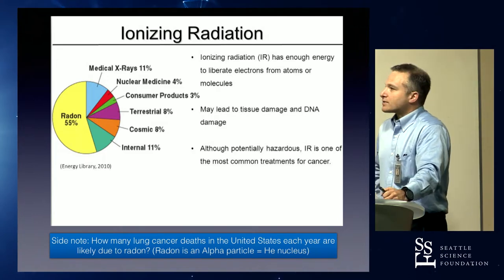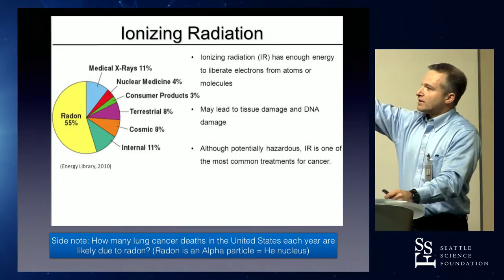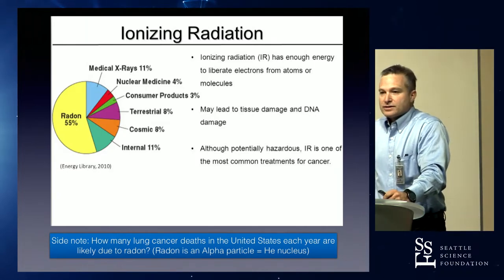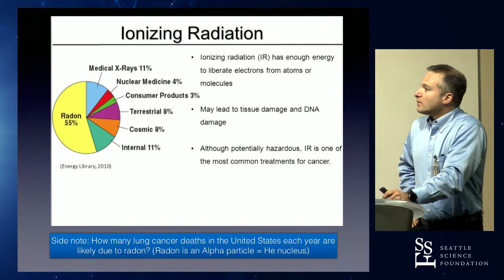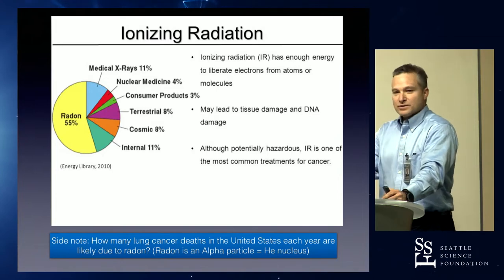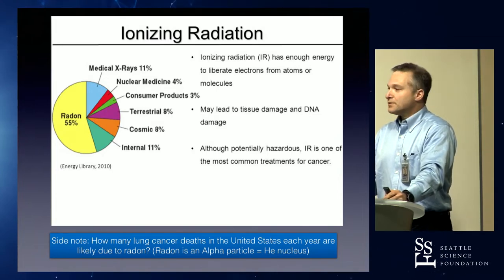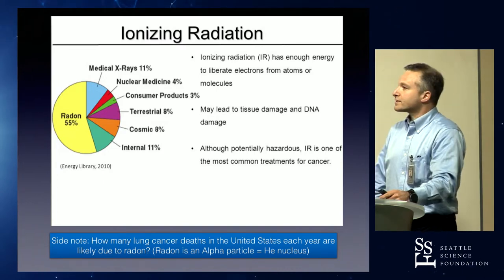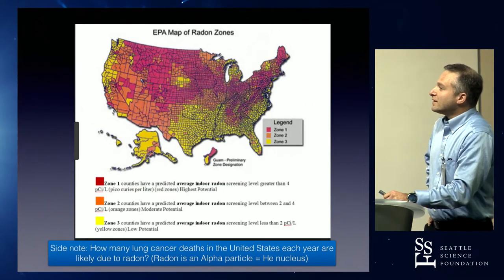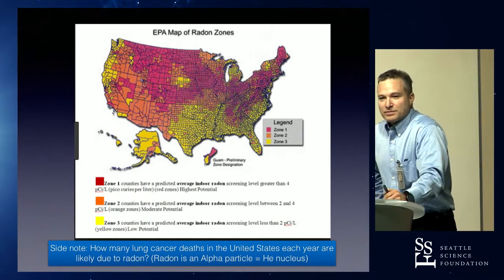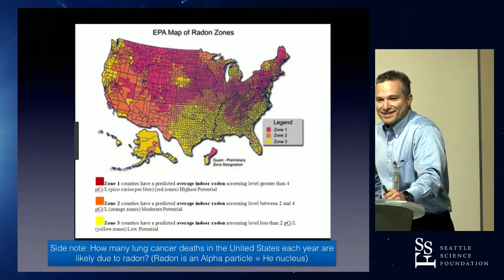Radon is serious because it's an alpha particle, and you inhale it — so it goes right to the lungs and it's close to a lot of important tissue. The alpha particle is a helium nucleus: two protons and two neutrons. It does a lot of damage; it's that high-energy, high-LET radiation that causes double-strand breaks. In some parts of the country you actually have to drill holes in your basement and circulate air to suck out radon. About 20,000 people a year are probably dying from radon-induced lung cancer based on epidemiological modeling.